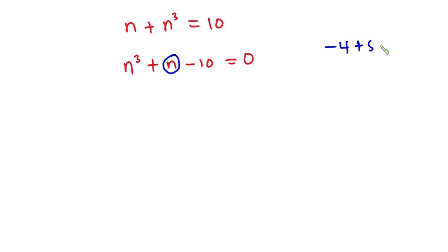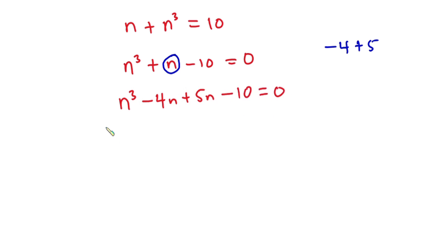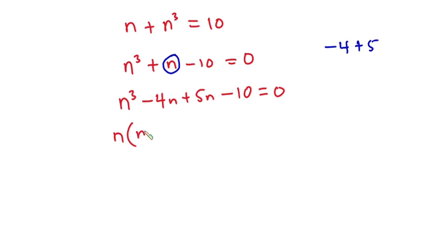Now let's pay attention to this n — it is the same as negative 4 plus 5. So in place of this n I'm going to write this, so the equation becomes n to the third power minus 4n plus 5n minus 10 is equal to 0. Considering these two pairs of terms, we can factor n from the first two, giving n times n squared minus 4, then factor 5 from the last two, giving n minus 2.